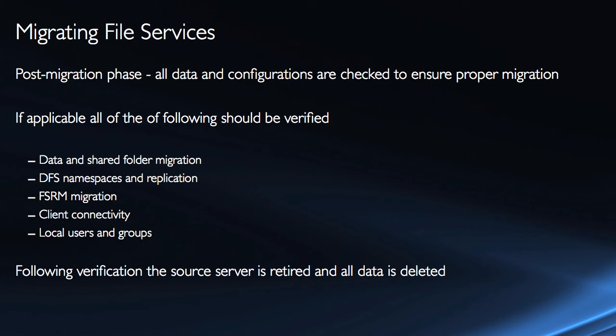Following verification — assuming that all this has gone off without a hitch, or after fixing any errors encountered — the source server is retired and all the data can be deleted. If you want, you can retire the source server without deleting the data, which allows you to transition more quickly but still have a rollback capability. This has just been a high-level view of the steps required to use the migration tools to migrate file services. Now we're going to take a look at a demo walking through the process of migrating file and print services from Windows Server 2003 to Windows Server 2008.